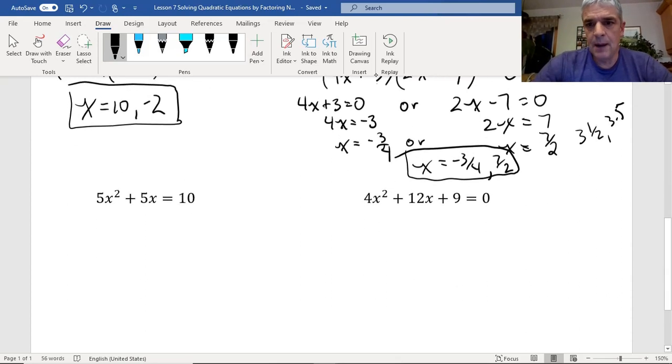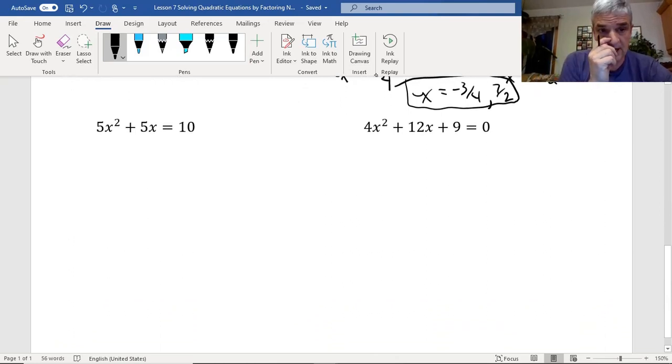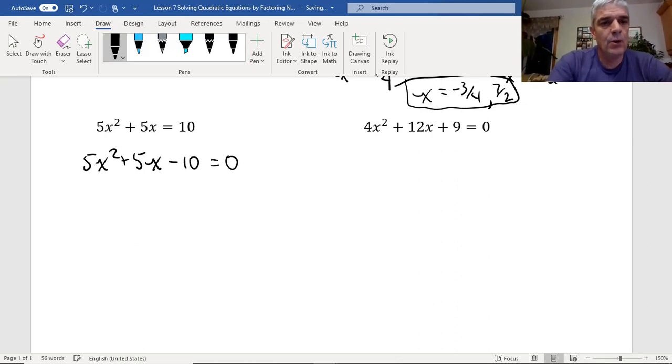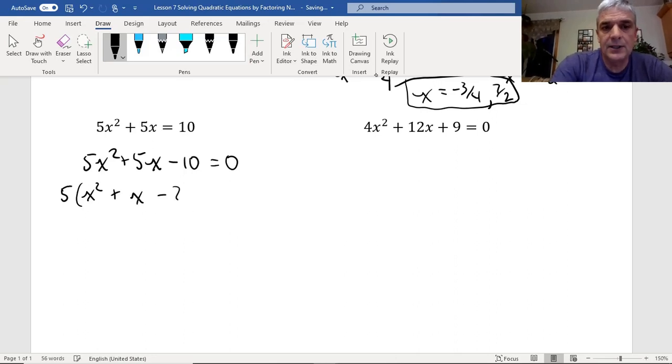All right, let's move on and do a couple more just to throw a few more tricks or changes at you. Once again, we're not set equal to 0, so we have to do that. So we write 5x squared plus 5x minus 10 equals 0. And then what I notice is that I have a common 5 that can be factored out, all of these. Now, you could go ahead and factor it like this, make your t-box and go that way. But if you have a common factor, it's to your benefit to common factor it out. So 5 is a common factor here, so I can get this answer here.